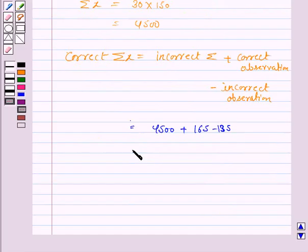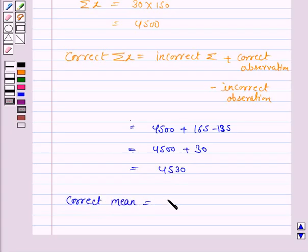So this is 4500 plus the correct observation which is 165, minus the incorrect observation which is 135. This equals 4500 plus 30, which is 4530.